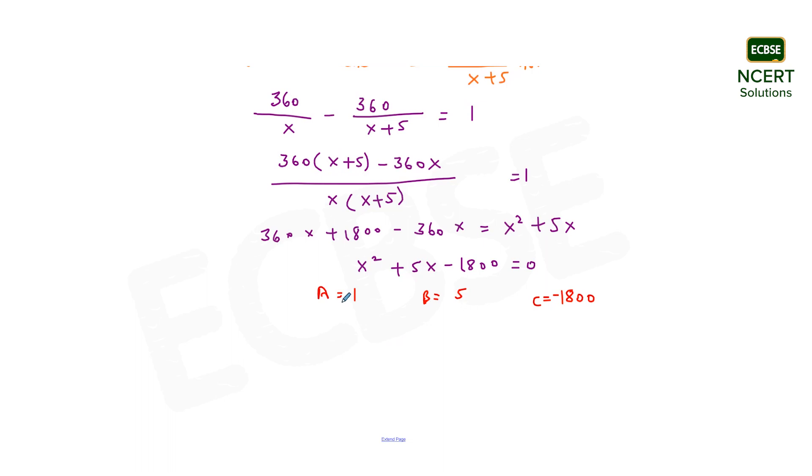Now substituting these values of A, B and C in the quadratic formula. Here the variable x will be equal to minus 5 plus minus root 7225 divided by 2, or it will be minus 5, taking the square root of 7225 comes out to be 5 times 17 divided by 2.